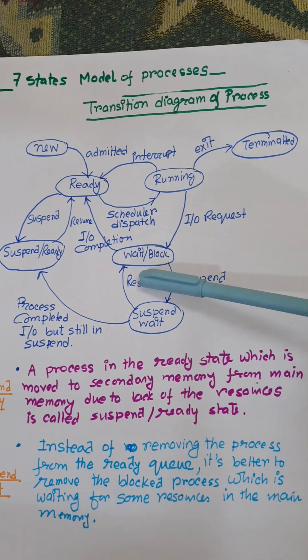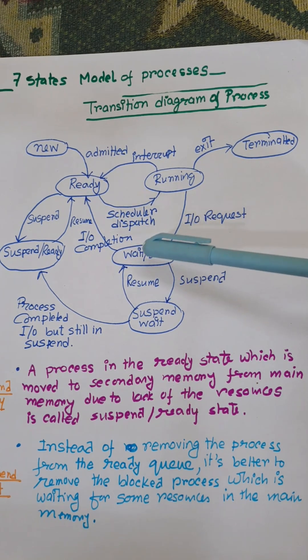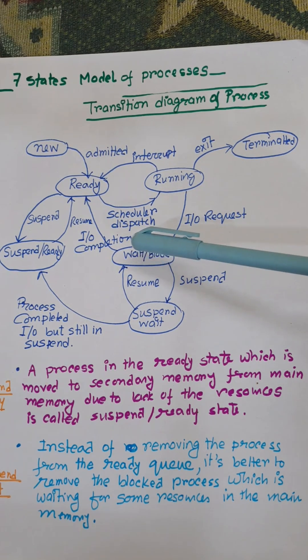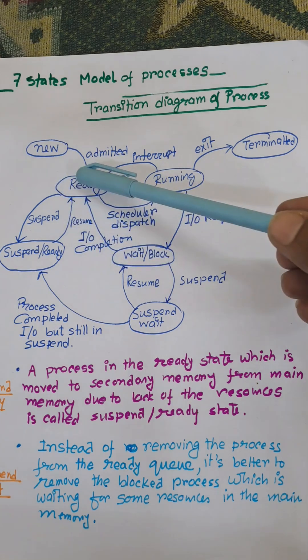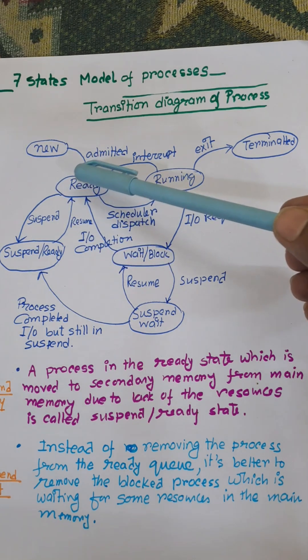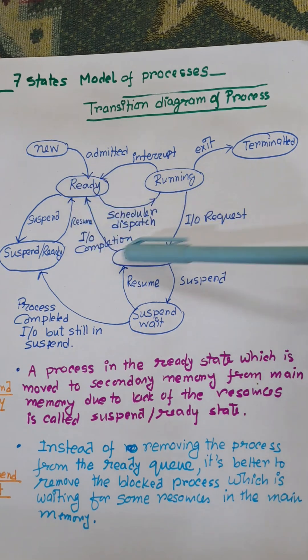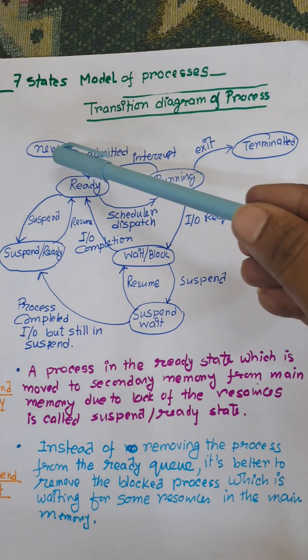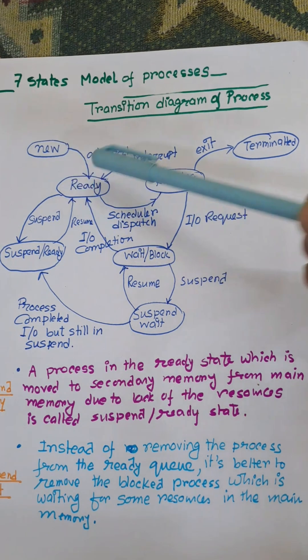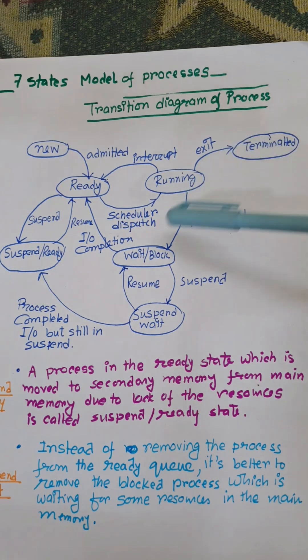That is wait and block. From the wait state, when the IO completes, it moves back to the ready queue. So this is the concept of the five state model: new, ready, running, terminated, and wait.